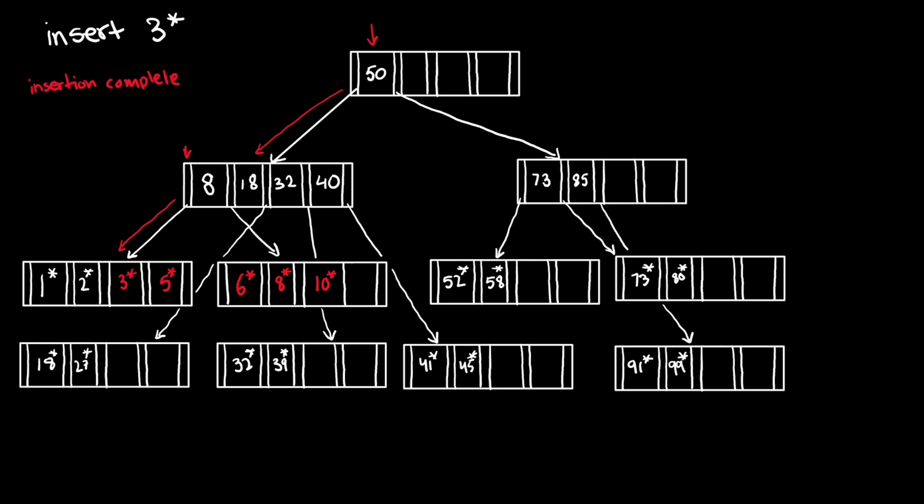Now, 3 is inserted, but we need to update the rest of the tree. This entry over here can no longer contain 8. We need to update it because we changed the first value to 6.